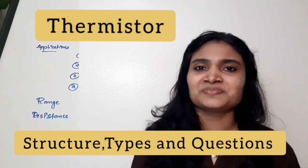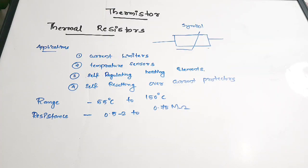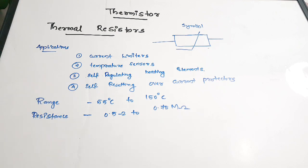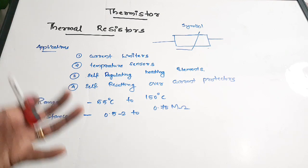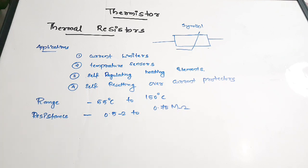So thermistor is an abbreviation or contraction of thermal resistors. These are resistors which depend on temperature — temperature-dependent resistors. It is a special type of resistor whose resistance value depends on temperature. Major areas of application include current limiters, temperature sensors for measuring temperature and getting a corresponding resistance value, which can be converted to current or any other variable.